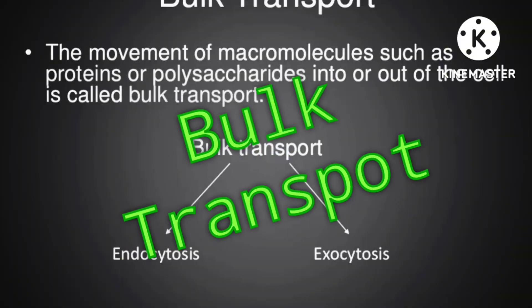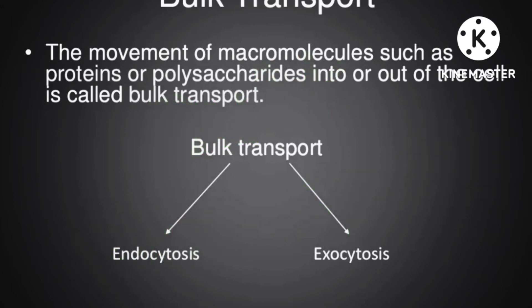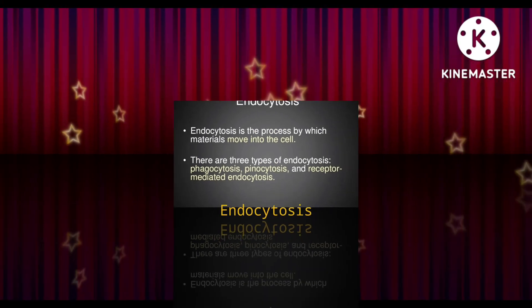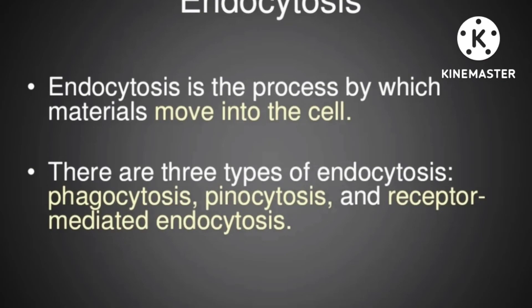The movement of macromolecules such as proteins or polysaccharides in and out of the cell is called bulk transport. When material comes inside the cell it is known as endocytosis; when it goes outside it is known as exocytosis. There are three types of endocytosis: phagocytosis, pinocytosis, and receptor-mediated endocytosis.